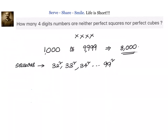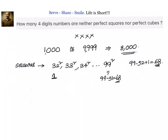So the perfect squares run from 32 squared up to 99 squared. To count them, we can directly compute 99 minus 32 plus 1, which equals 68. Alternatively, since 32 squared is the first number, we shift: 32 minus 31 equals 1, so 99 minus 31 equals 68, giving the 68th position. Either way, there are 68 perfect squares among four-digit numbers.